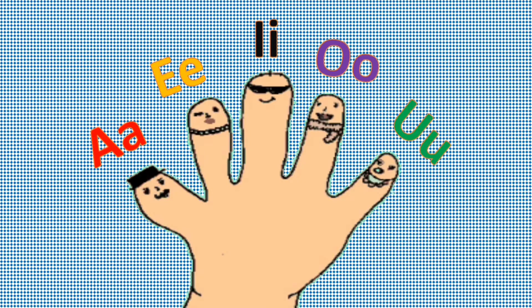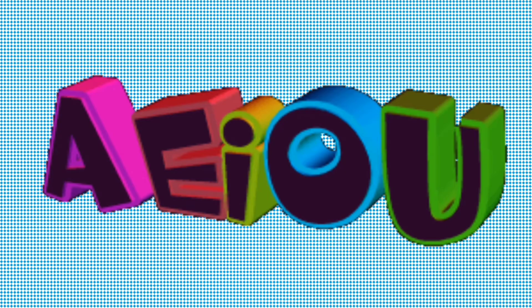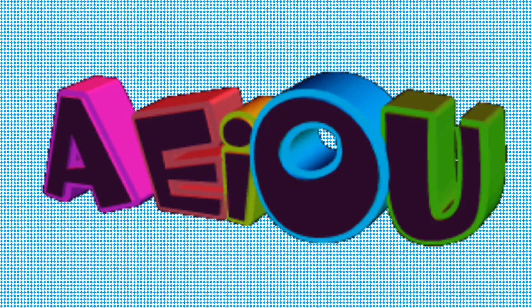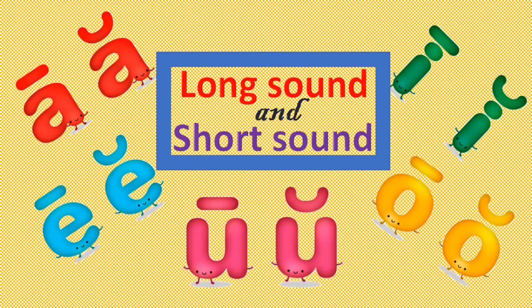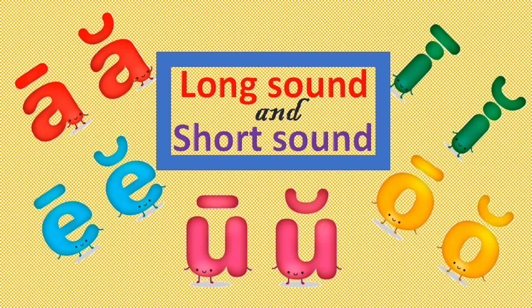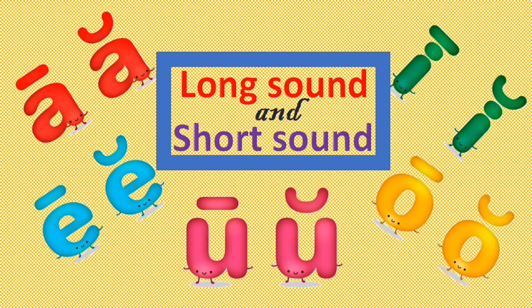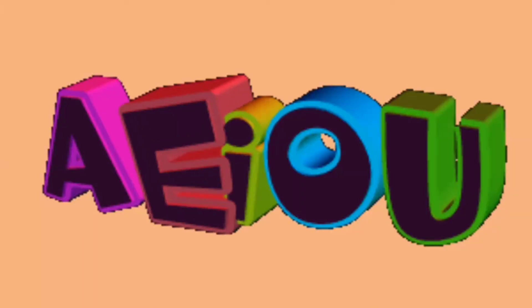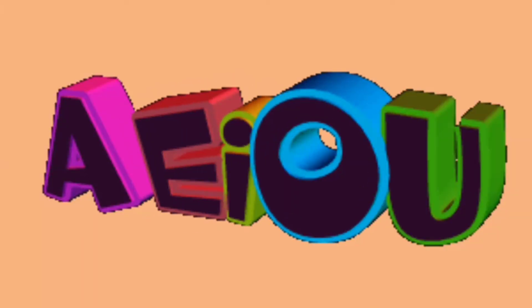Here we have five vowels: A, E, I, O, U. Vowels make two sounds — short and long. A, E, I, O, U.